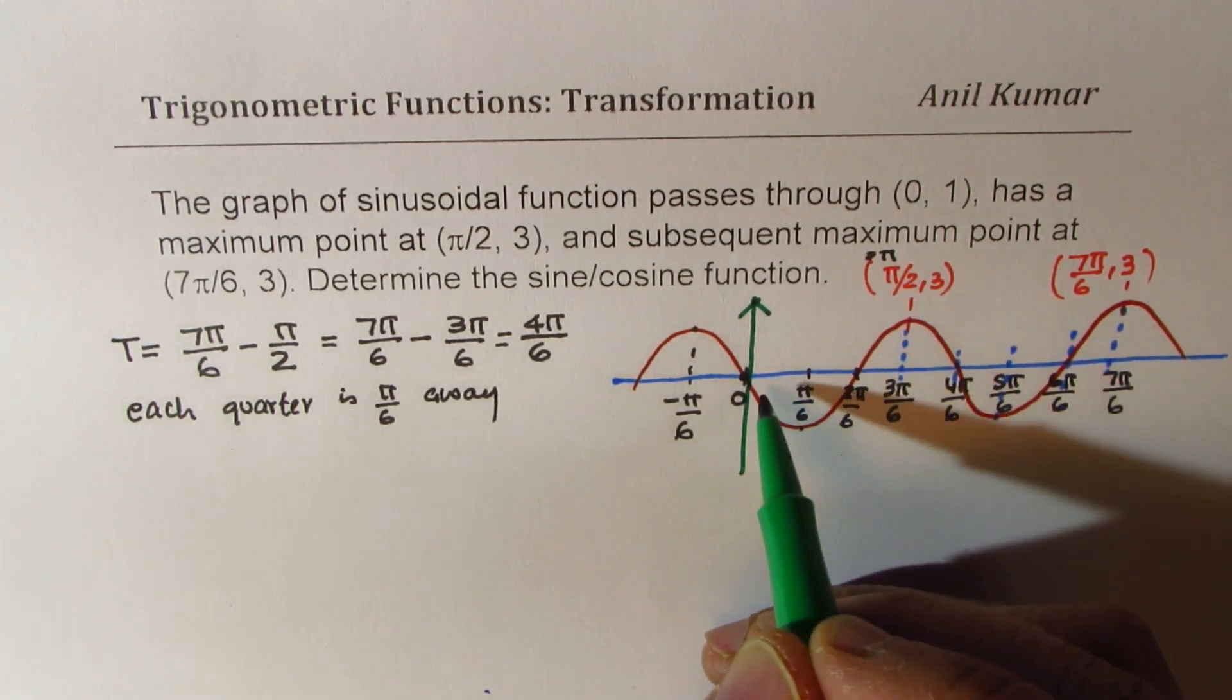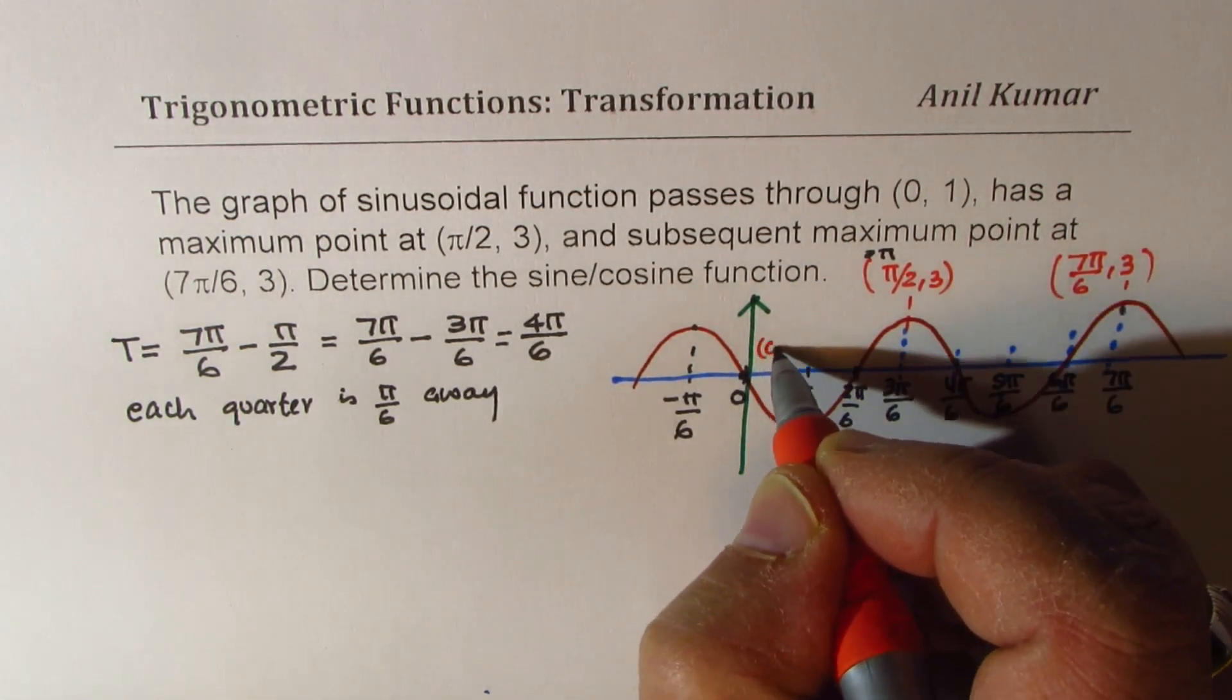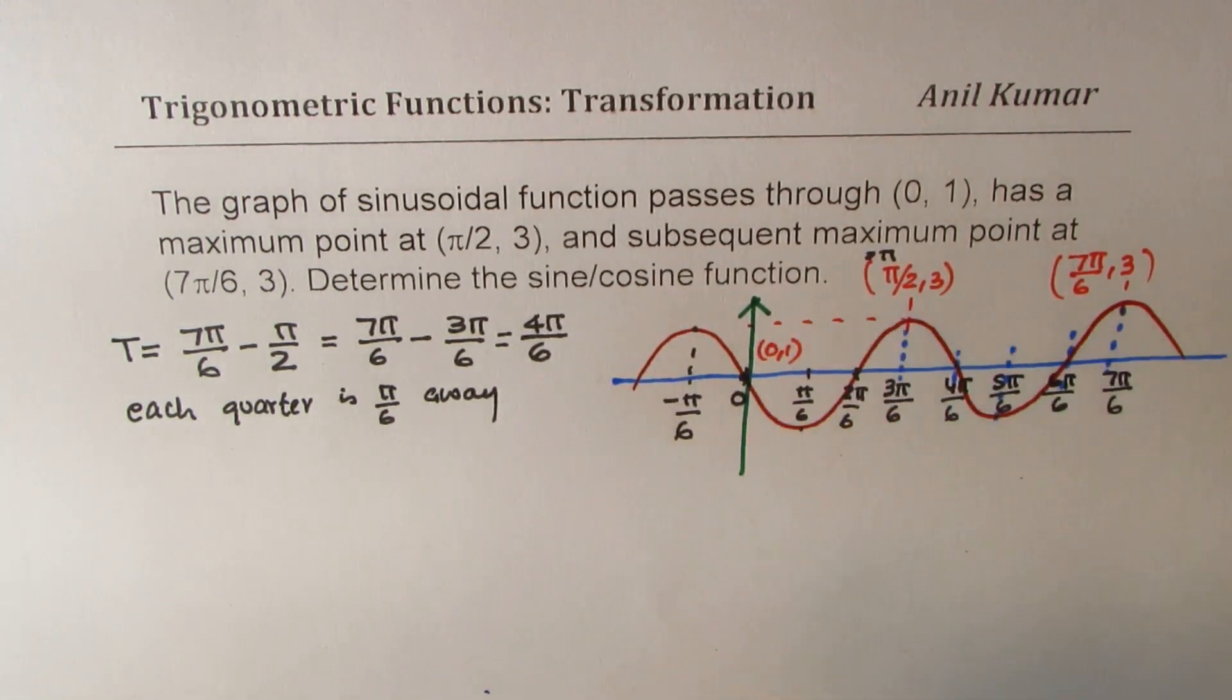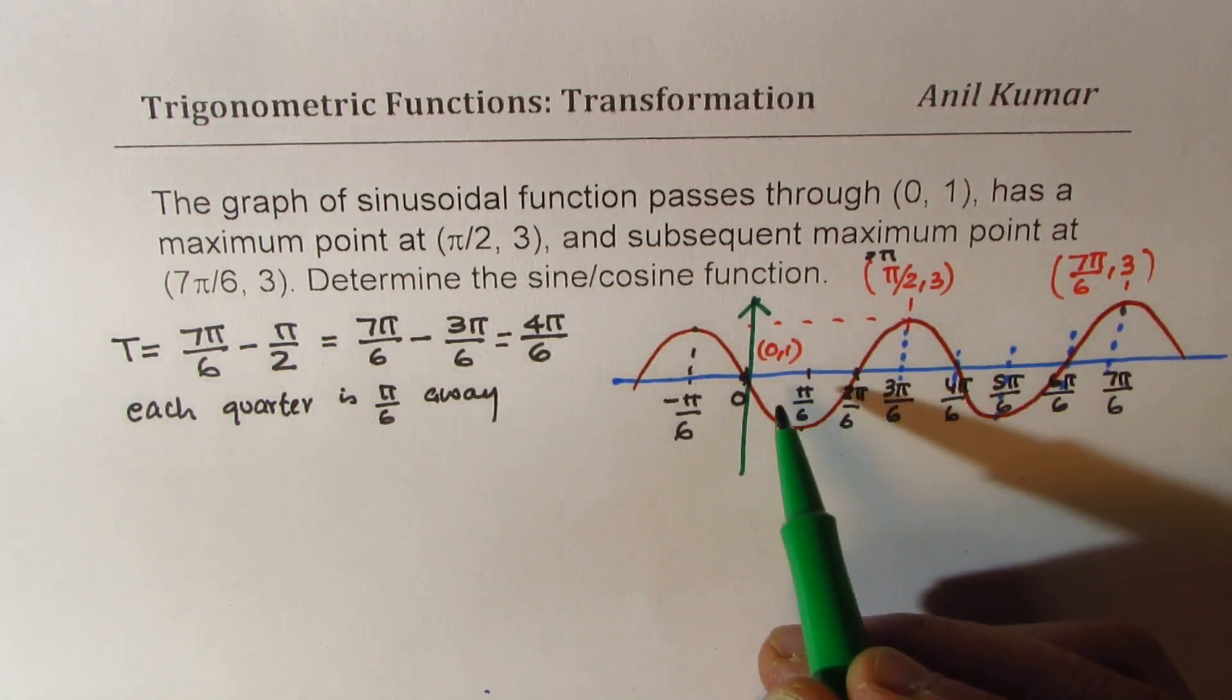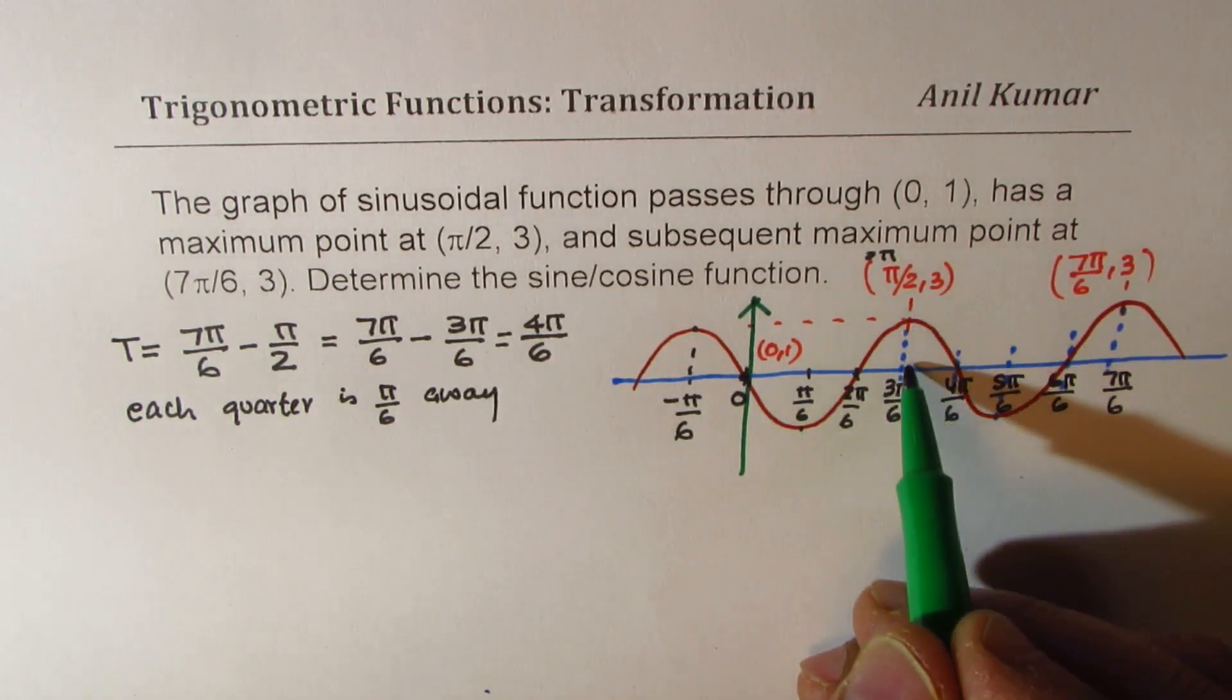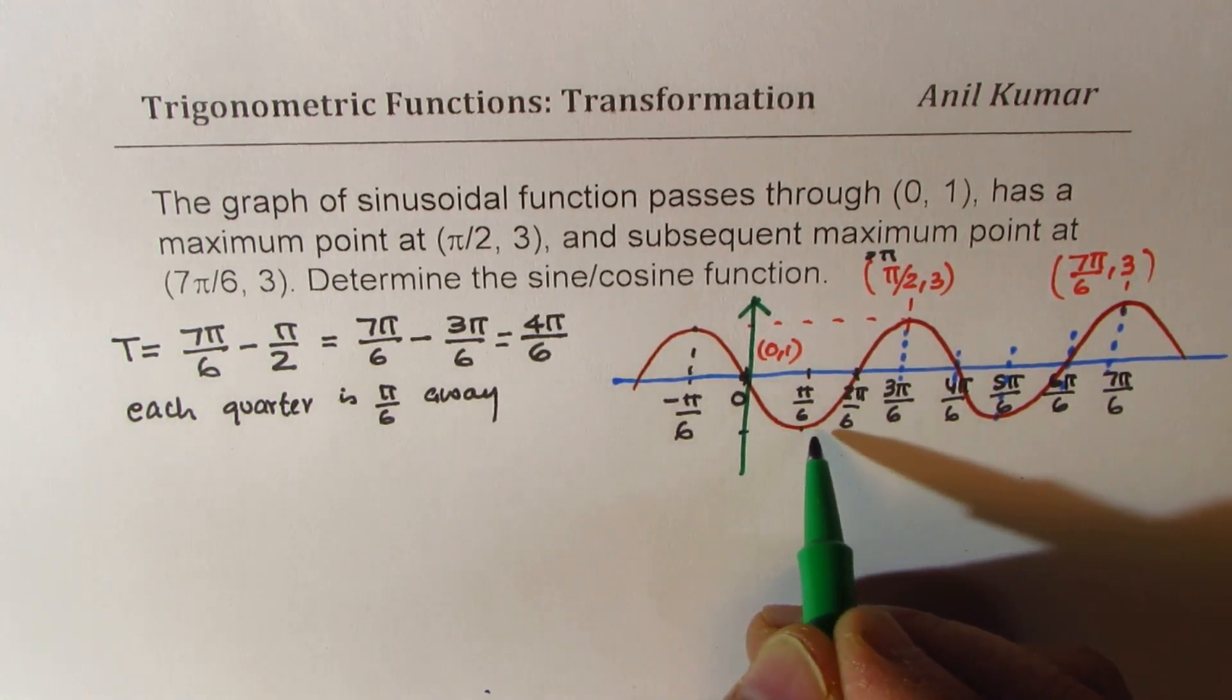Now from here, if this point is (0, 1), so we are saying this point here is (0, 1). That means above this point, we have 2 units. That will make it 3. So from here, 2 units below will be from the symmetry. This is 3 up, so 3 down, so this will be at 2 units below this.